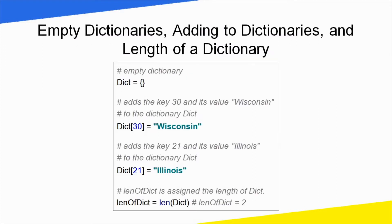Next, we create an empty dictionary. We create it using empty curly braces — that is an empty dictionary. First we create the empty dictionary, then we add values.